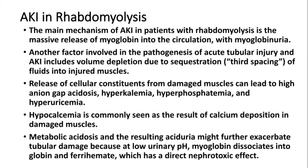The most important complication of rhabdomyolysis is acute kidney injury. The main mechanisms are the massive release of myoglobin into the circulation causing myoglobinuria, and loss of volume from the intravascular compartment due to third-space sequestration of fluid, which produces reduced renal circulation. So the two key features are elevated myoglobin causing kidney damage, and reduced kidney perfusion.